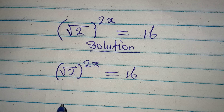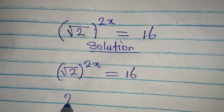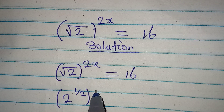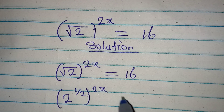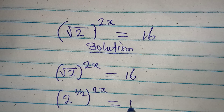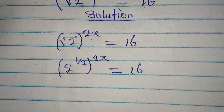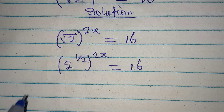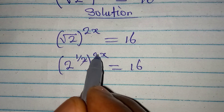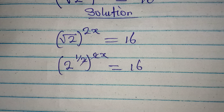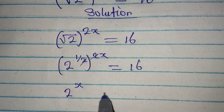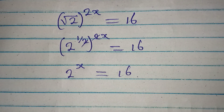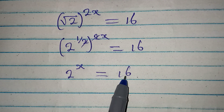We can say that this is the same thing as 2 to the power of 1 over 2, to the power of 2x, and this is equal to 16 — because 2 to the power of 1 over 2 is the same as square root of 2. Now these two exponents multiply, so we have 2 to the power of x equal to 16.